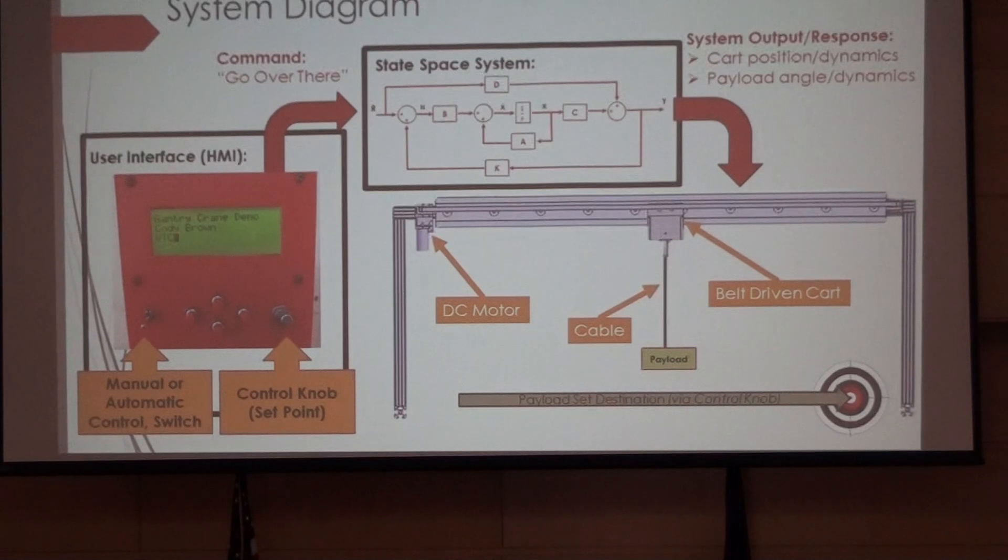Okay, so here diving into it is my system diagram and you can see before you that there are three main parts. We're going to start on the left where we have our user interface or human-machine interface, HMI. Here is where the user or the human asks the system to do what they want. In this case, you're going to toggle between automatic and manual control with the switch on the left. And then with the knob on the right, you're going to set a point at which you want the gantry crane to move to.